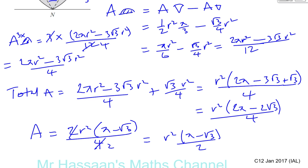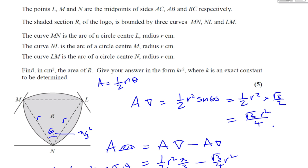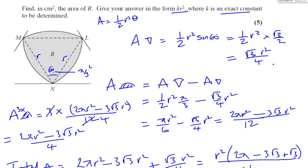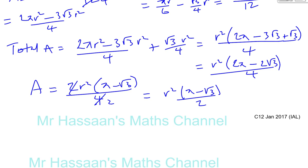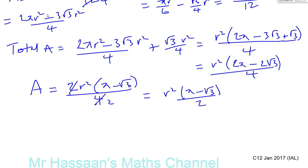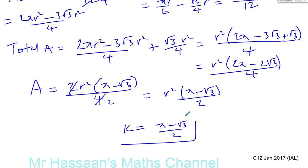We can see that the area is in the form KR squared, so K equals (pi minus root 3) over 2. And there's the answer. Thank you for paying attention.